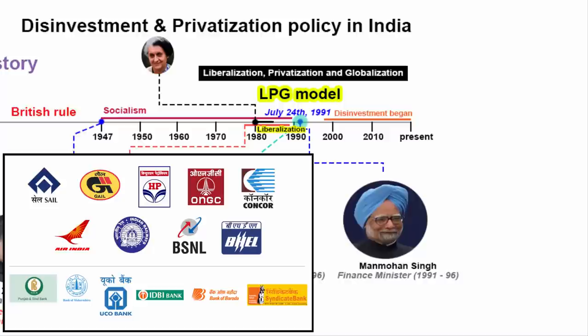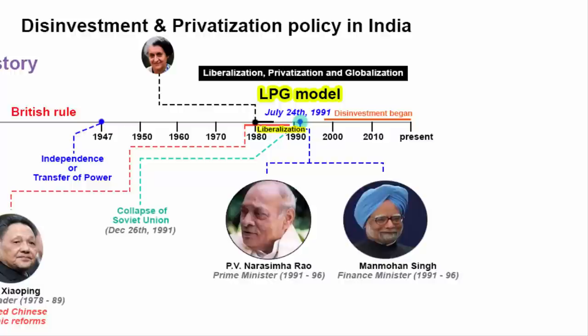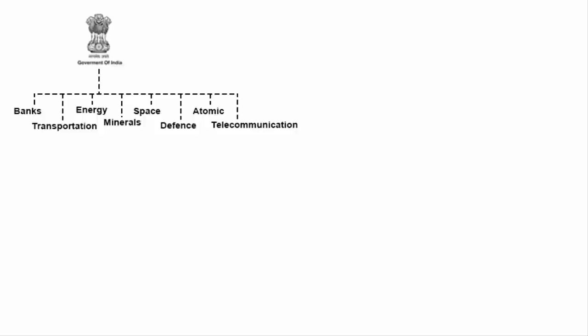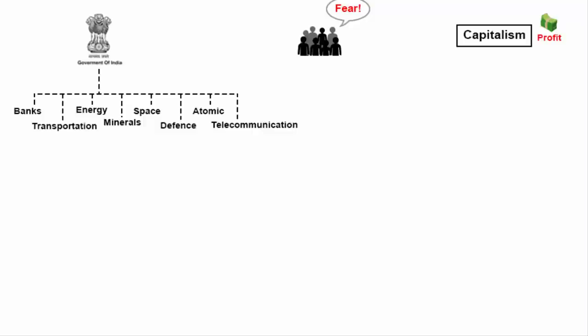The question is why are these public sector companies running at a loss? It is because when PSUs were formed, India was a socialist economy, meaning the government was the owner of most assets in the country. There was a fear that capitalism, which works on a profit basis, would not work towards the welfare of the people. The government, by nature a democratic institution serving the public, became the owner of these PSUs, and these government companies became the crown jewels of India's socialist legacy.